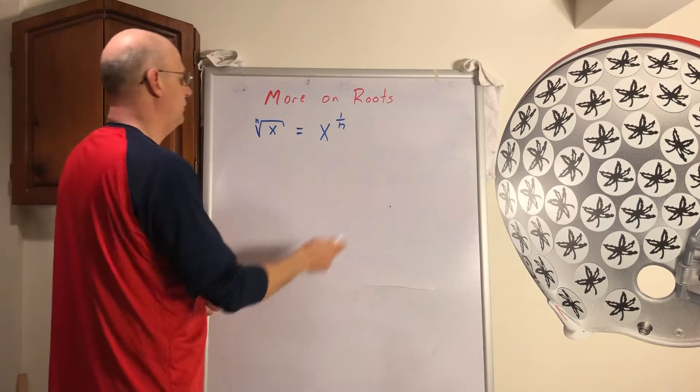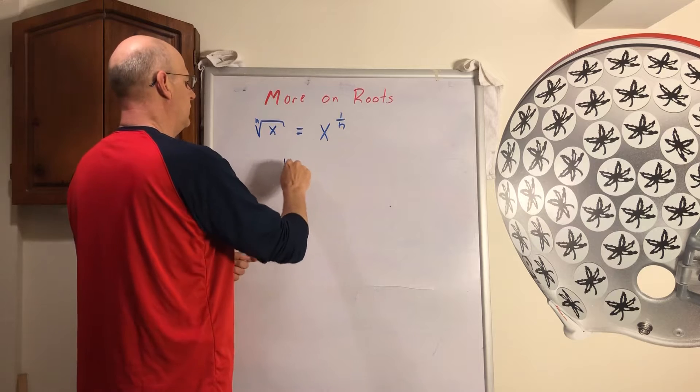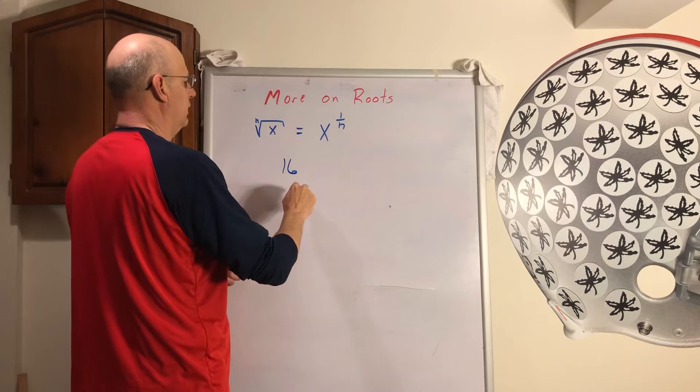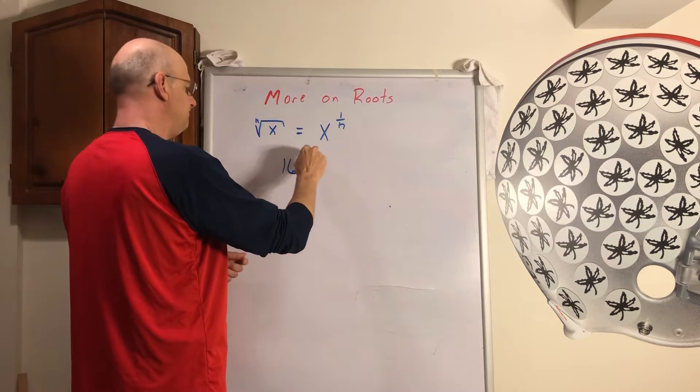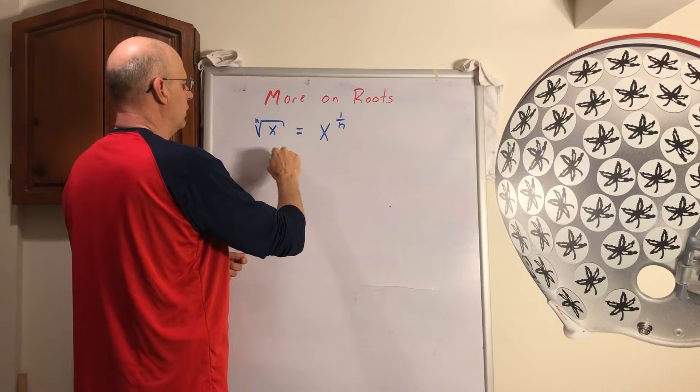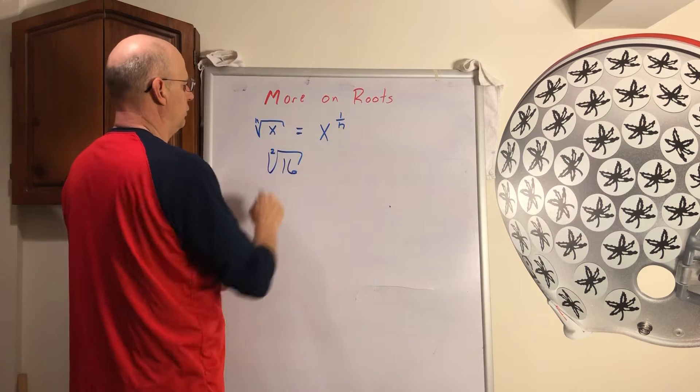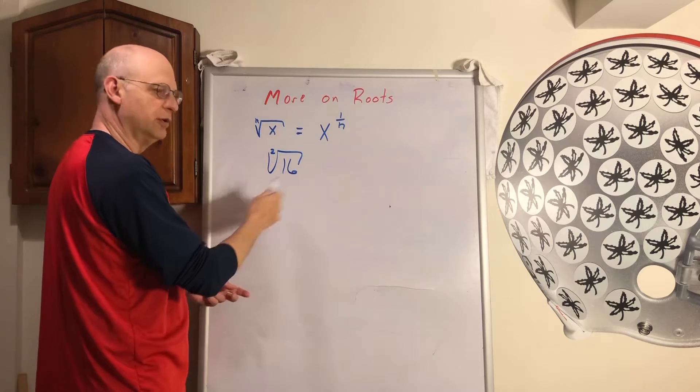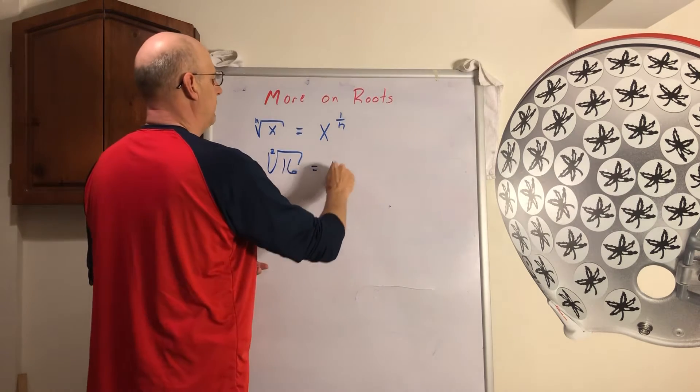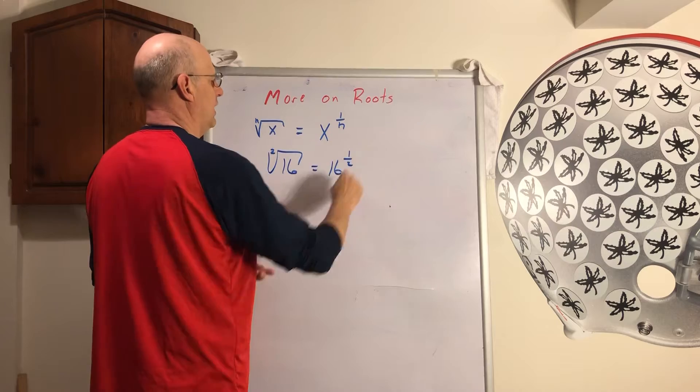And what you're thinking of is if you had, let's say we make it real simple, let's say you have 16 and we want the square root of it, so it's like you have a little 2 there. You don't have to write the 2 for square root, but we know it's there. That means it's 16 to the 1 half power.